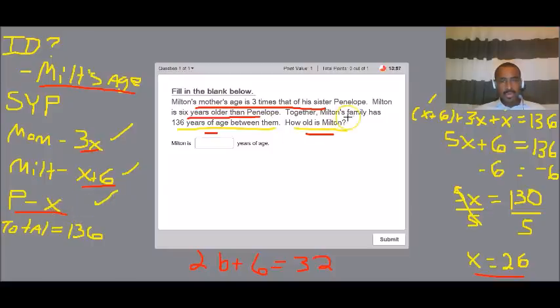And because we know the total of all their ages together is 136 years, we can set up the equation. So here X plus six represents Milton, 3X represents mom, and then X represents Penelope. And that's all equal to 136. And then we just go down and solve the equation from there.